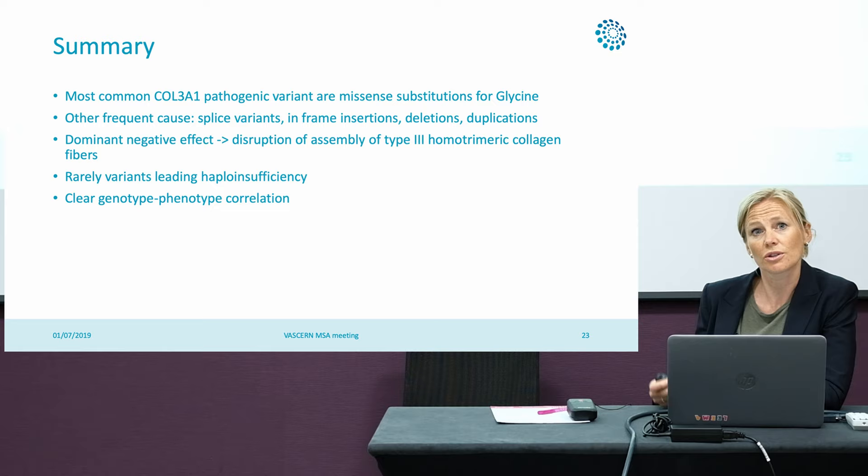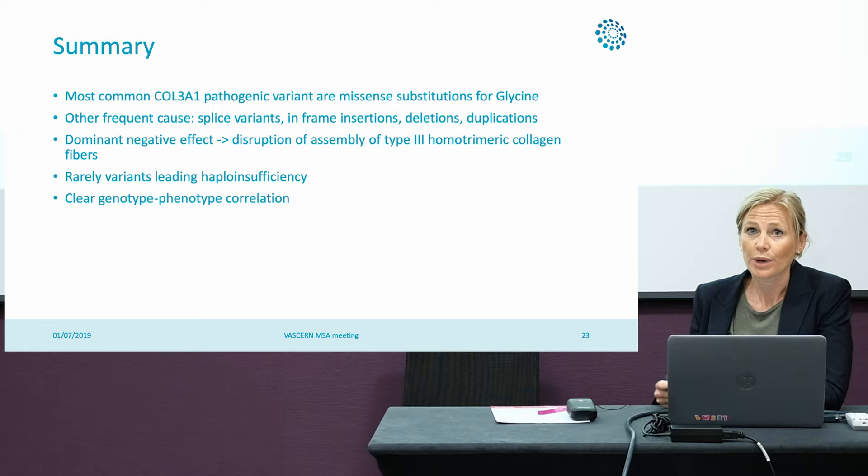To summarise: the most common COL3A1 variants are missense substitutions of the glycine amino acid. Another frequent cause are splice variants. Both of these variants cause a dominant negative effect. We rarely see variants that lead to haploinsufficiency, and there is a clear genotype-phenotype correlation.